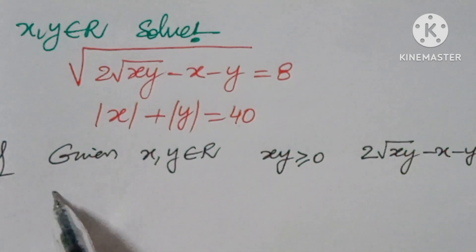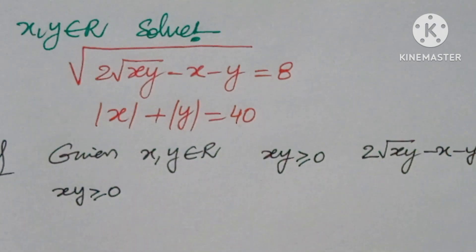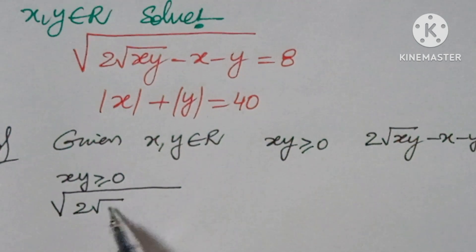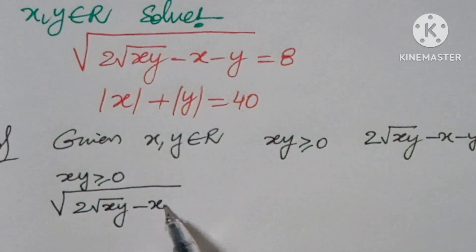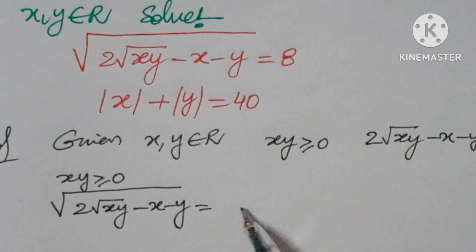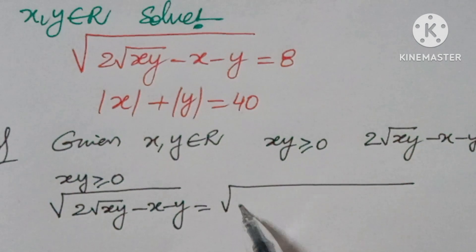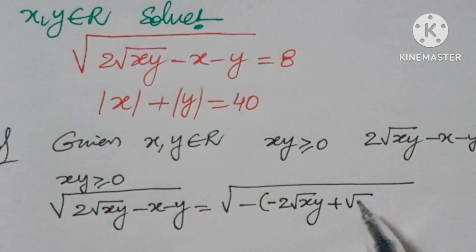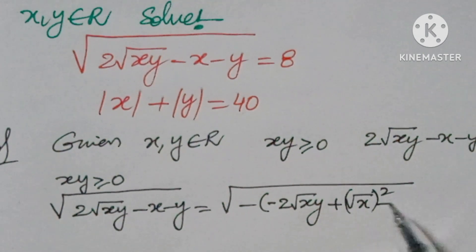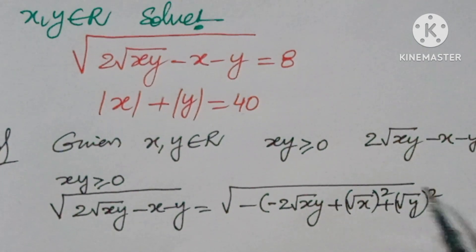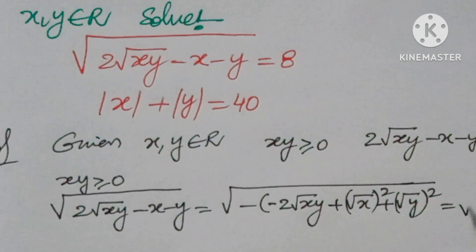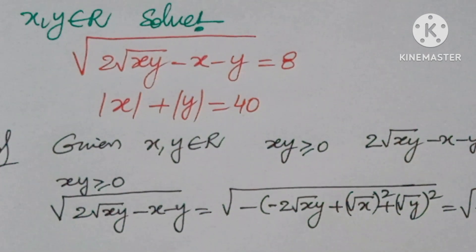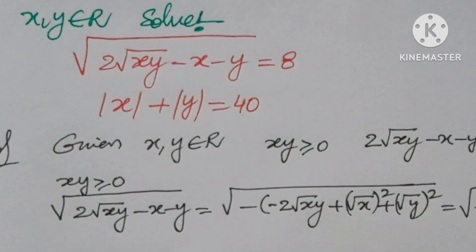So, if we take xy ≥ 0, then the first equation — 2√(xy) − x − y — can be rewritten as (√x)² − 2√x·√y + (√y)², which equals (√x − √y)².